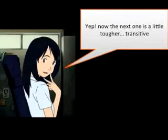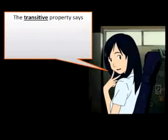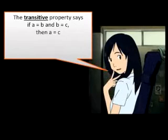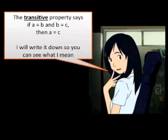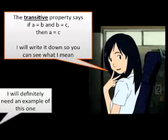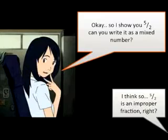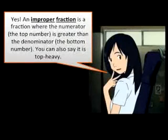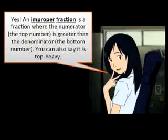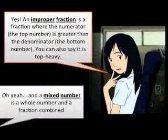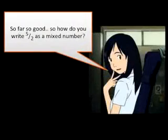Now the next one's a little tougher — transitive. The transitive property says if a equals b and b equals c, then a equals c. I'll write it down so you can see what I mean. I will definitely need an example of this one. Okay, so I show you five over two. Can you write it as a mixed number? I think so. Five over two is an improper fraction, right? Yes, an improper fraction is a fraction where the numerator, the top number, is greater than the denominator, the bottom number. You can also say it is top heavy. And a mixed number is a whole number and a fraction combined. So far, so good.